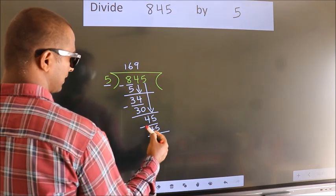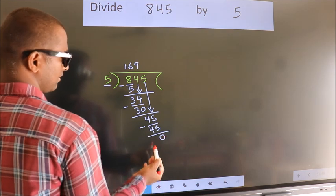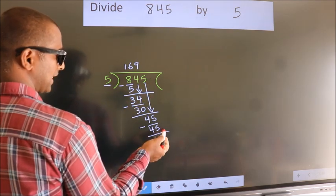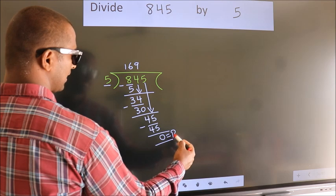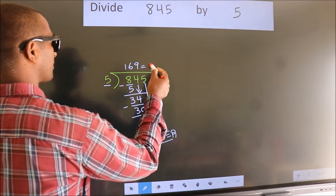Now we subtract and get 0. No more numbers to bring down, so we stop here. This is our remainder, this is our quotient.